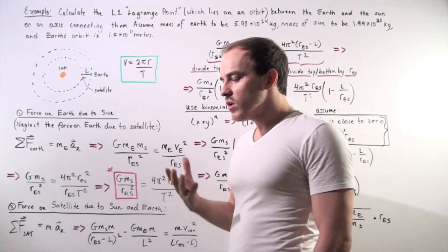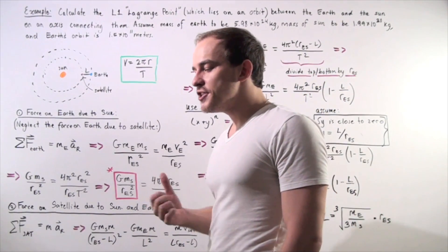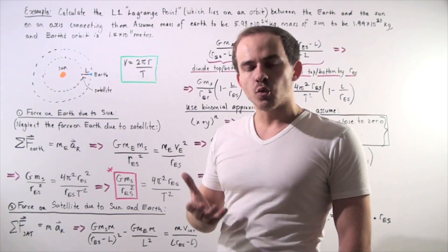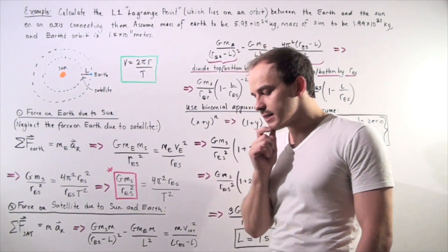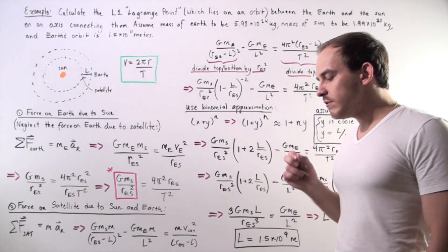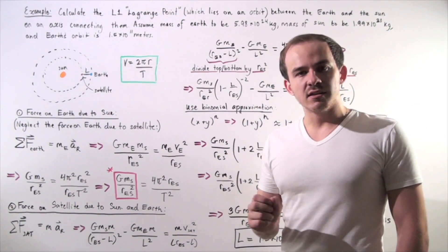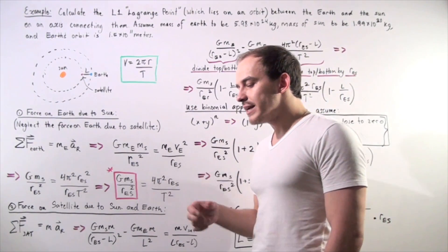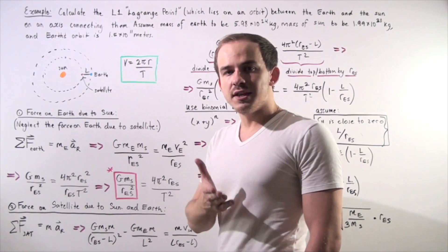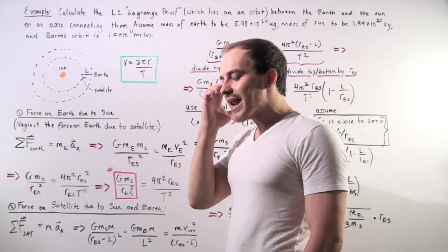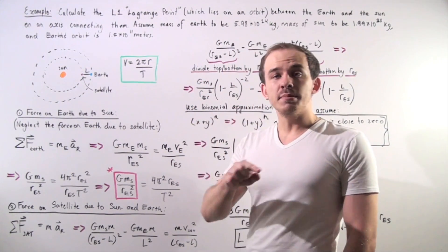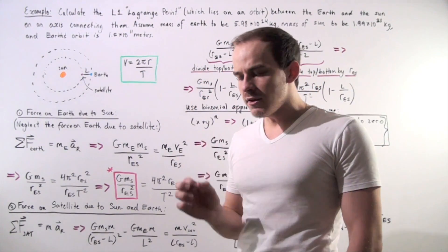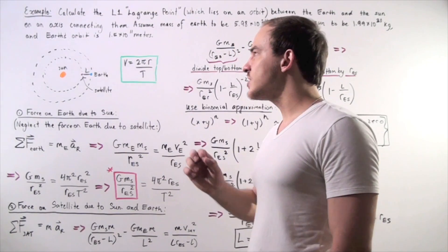So earlier, we spoke about Lagrange points, and we said that five Lagrange points exist. We also said that if we take a satellite and place it onto one of these Lagrange points, the satellite will orbit the Sun with the same exact period as the Earth.